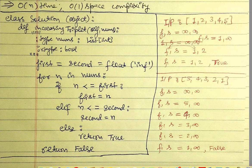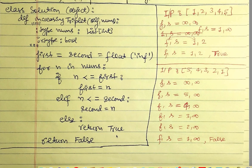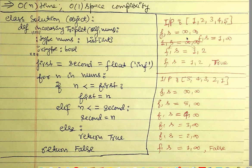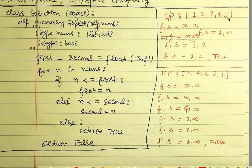Now the number 3 arrives. Three is greater than `first` (which is 1), so the first condition doesn't satisfy. Three is also greater than `second` (which is 2), so the second condition doesn't satisfy either. We fall to the else and return true — we found the triplet. The function returns true immediately without checking further elements.